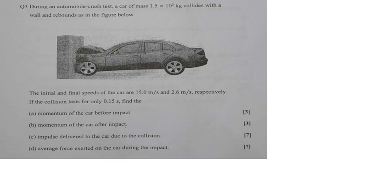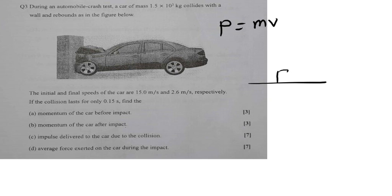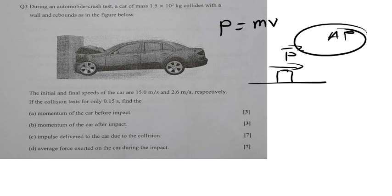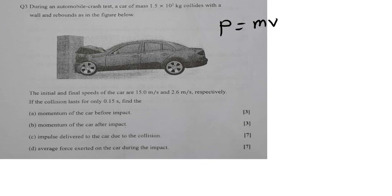Find (c) impulse delivered to the car due to the collision, and (d) the average force exerted by the car during the impact. Let's first understand the question. It's very important to teach everything about momentum from just this question. So what is momentum? Momentum, represented by P, is defined as the product of mass times velocity. If an object is moving and has mass, then we expect it to have momentum, and as the object moves, momentum is changing.